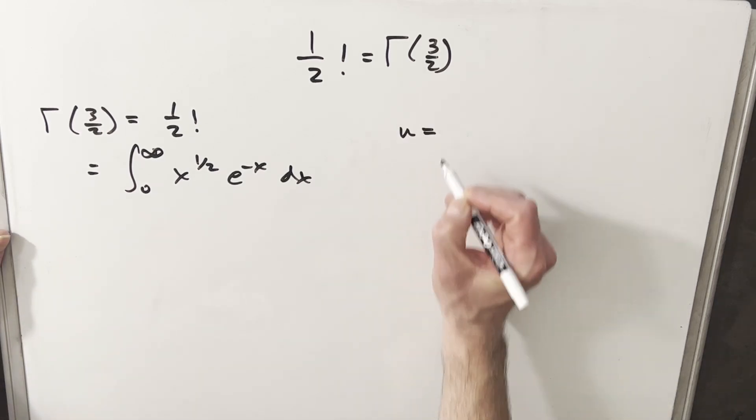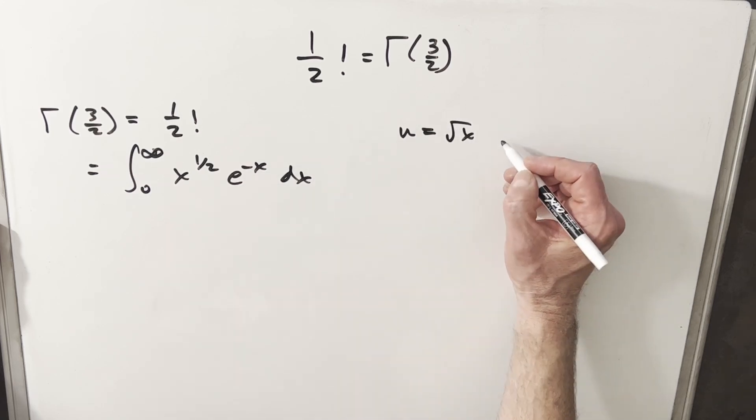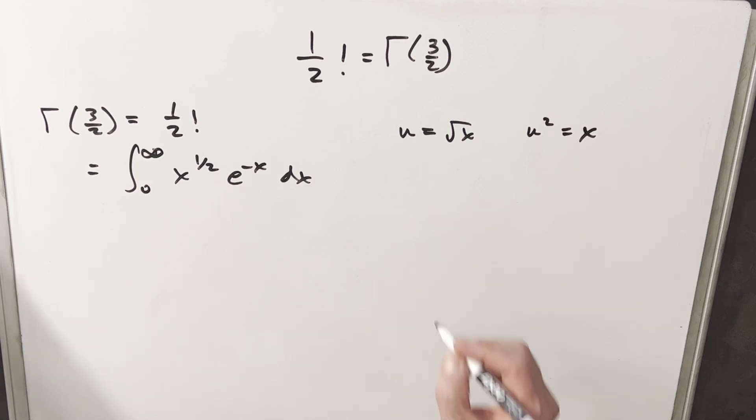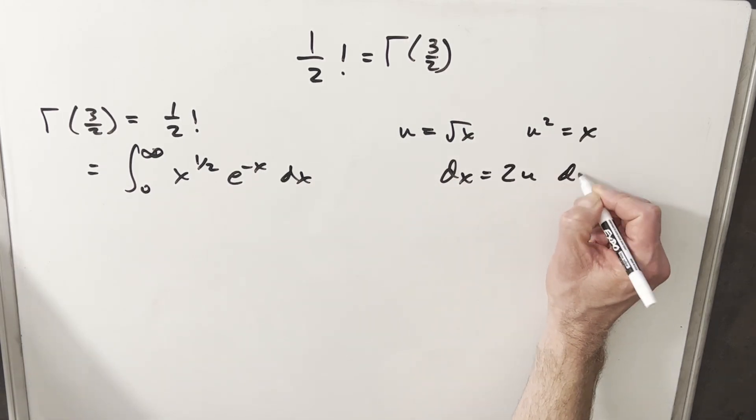To start on this, I'm going to make a u substitution. I'm going to call u equal to this square root of x right here, and therefore x is going to be equal to u squared. Then taking the derivative dx is going to be 2u du.